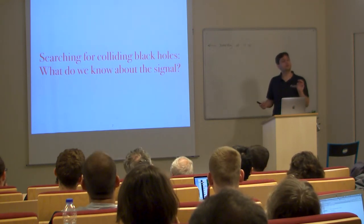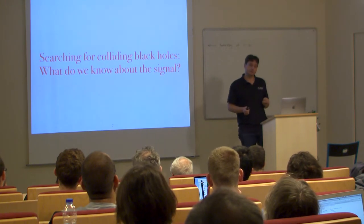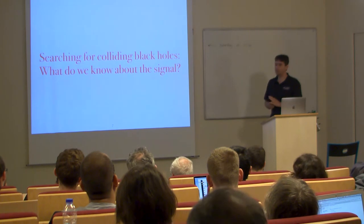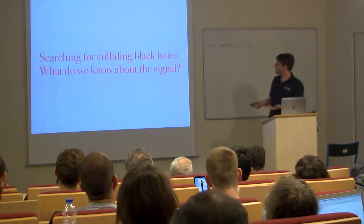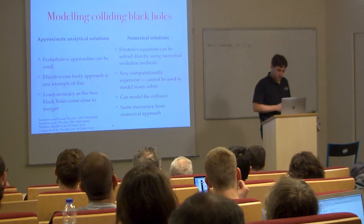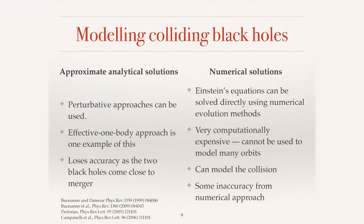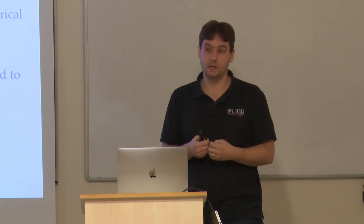Let's go through the grounding first — what are the things we need coming in to do this search? I want to talk about what we know about the signal. As already described, there's basically an industry in the field trying to generate accurate models for compact binary mergers. These come from two directions: first, the approximate analytical solutions — the post-Newtonian expansion and the effective one-body approach — which model the inspiral portion of the waveform.